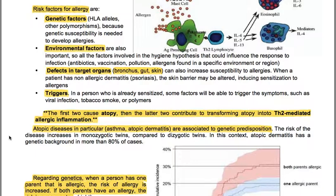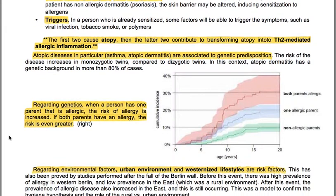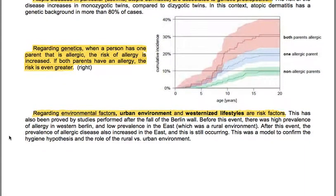Atopic diseases, particularly asthma and atopic dermatitis, are associated with genetic predisposition. The risk increases in monozygotic twins compared to dizygotic twins, and atopic dermatitis has a genetic background in more than 80% of cases. Regarding genetics: if one parent is allergic, the risk of allergy increases to 20%; if both parents are allergic, the risk is 30%, compared to 10% in non-allergic parents.